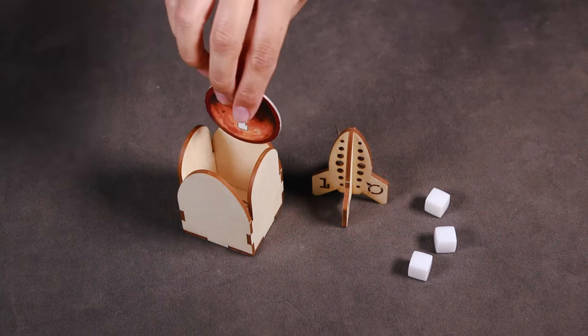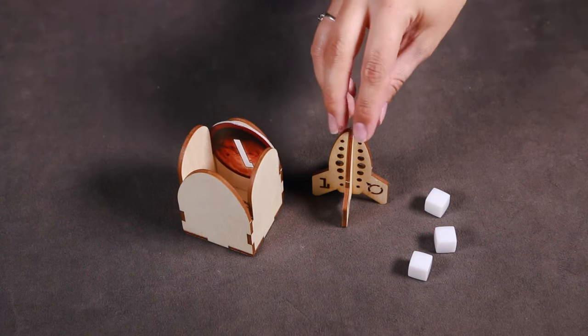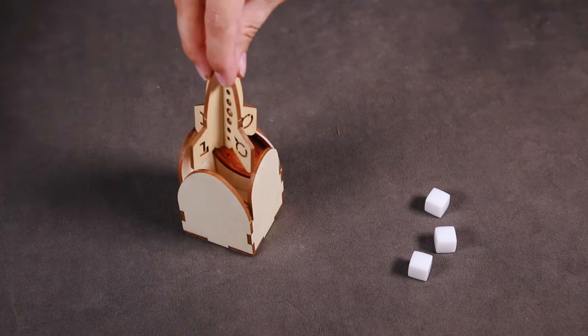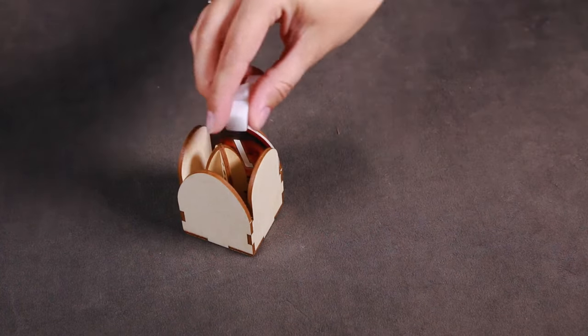The rocket token tray will store the first player rocket token, first player cardboard token, and the three white game board markers.